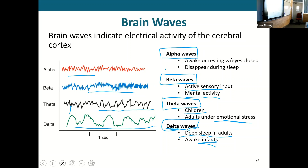If you did an EEG while someone was awake and instead of alpha waves you ended up with theta or delta waves, that's when you would suspect there's a neurological disorder.